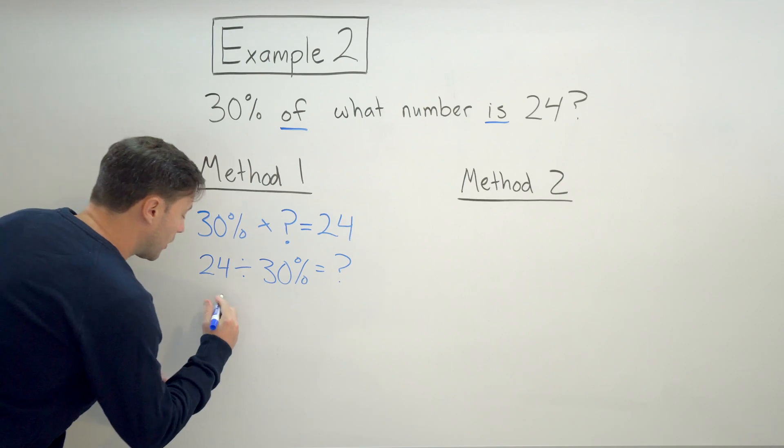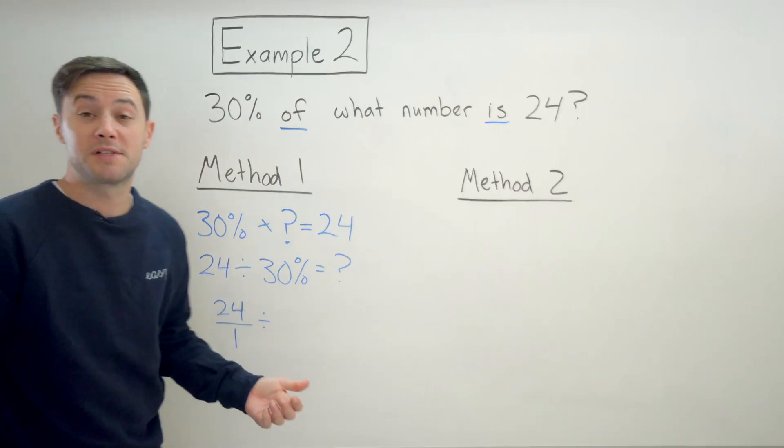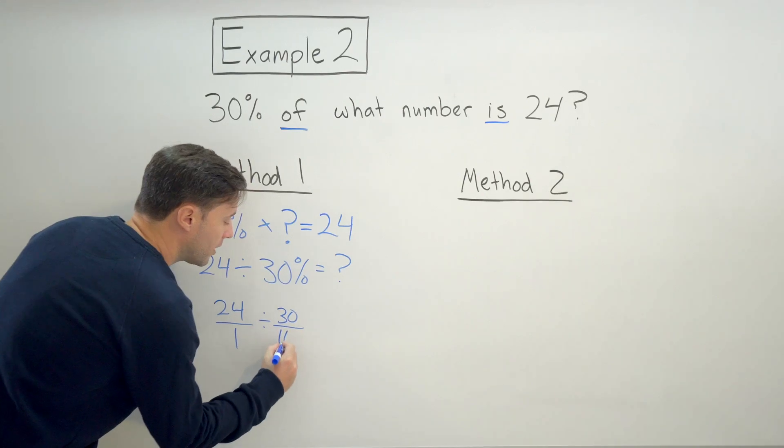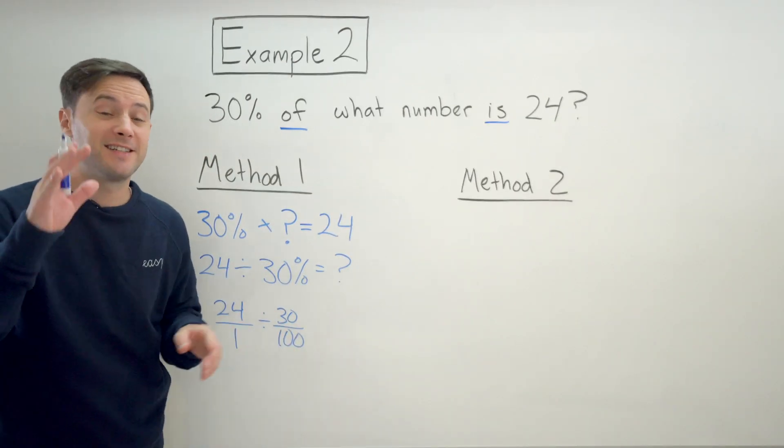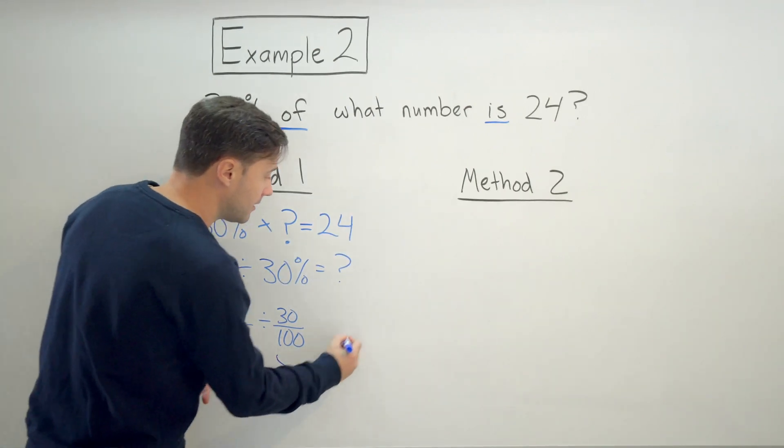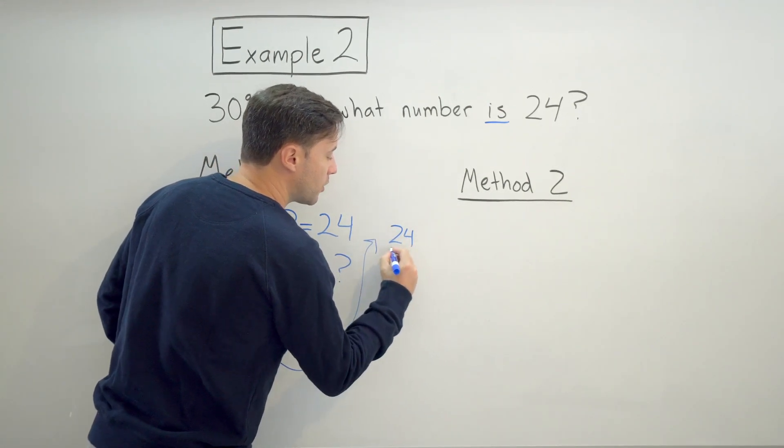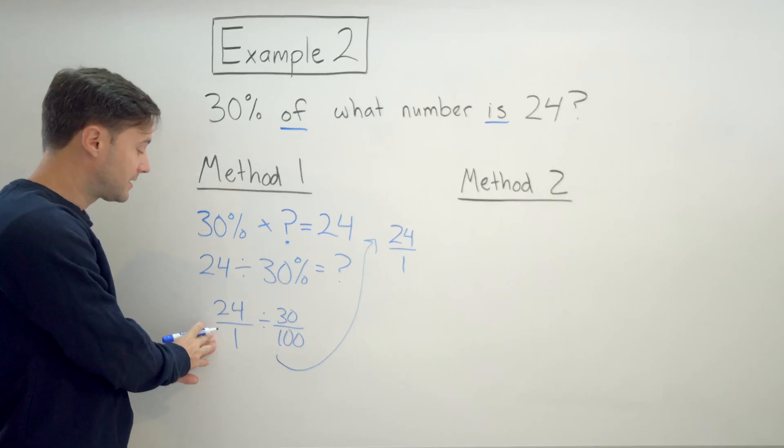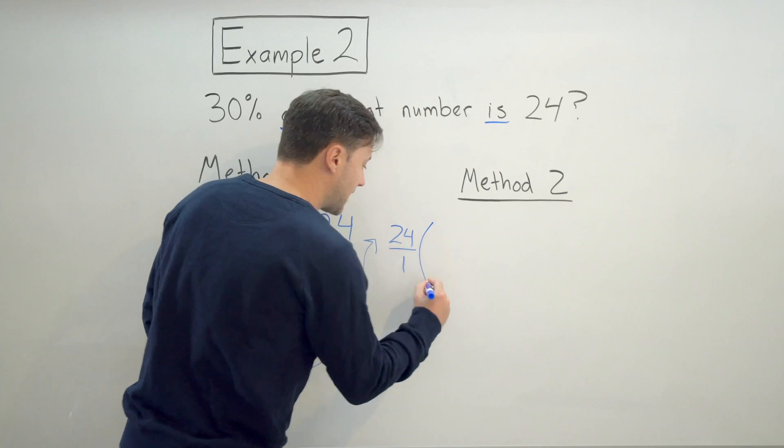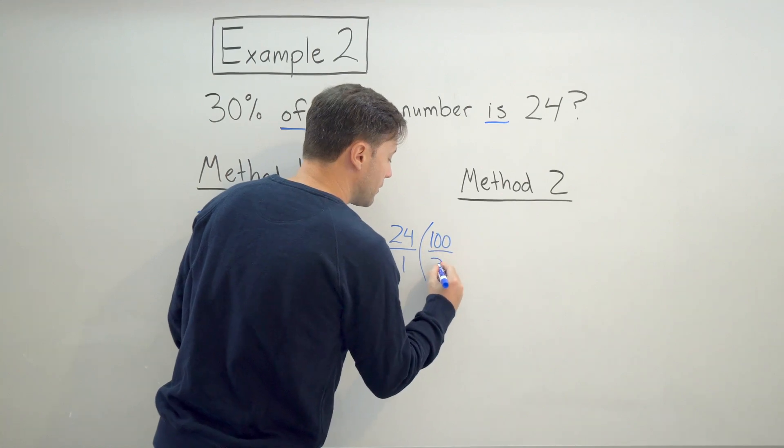So I'm going to write 24 as a fraction. So 24 over 1 divided by 30%. We're going to write that as a fraction. So that's going to be 30 over 100. Dividing by a fraction is the exact same thing as multiplying by its reciprocal. So I'm going to bring this up here with a little bit more space. So that's going to be the exact same as 24 over 1, keep the first number the exact same. Division changes to multiplication, so times the reciprocal. So that's going to be 100 over 30.